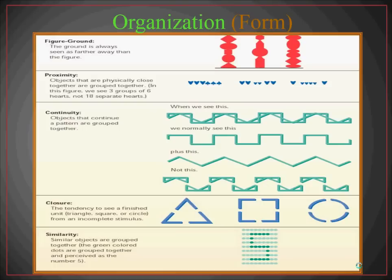Continuity is when objects continue a pattern — we see them grouped together. In the top figure, many people would see a square portion mixed with a pyramid or triangle portion together. You typically don't see little bow ties alternating up and down. You're looking for something that is more fluid and exists left to right throughout the entire image, something that makes sense throughout rather than clumps of random shapes.